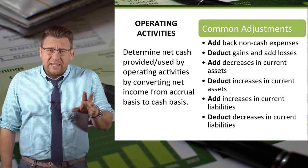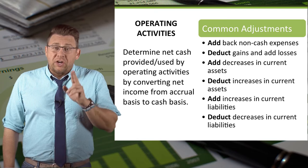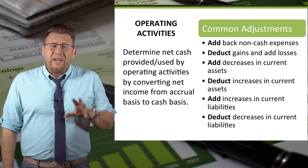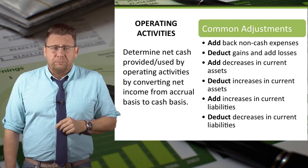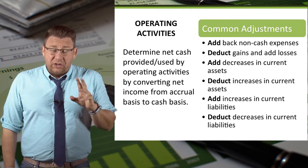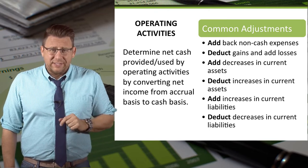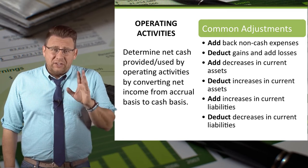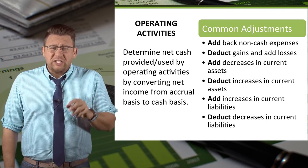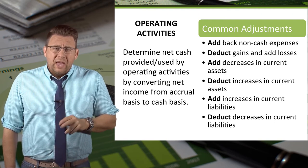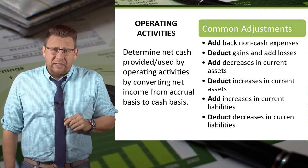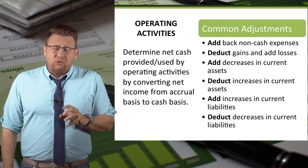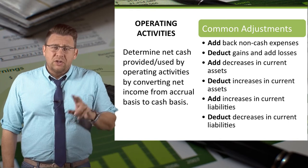We subtract gains and add back losses, because gains and losses are not the result of operating activities, but rather investing and/or financing activities, so we need to cancel out their effect in the operating activities section. We also deduct increases in current assets and add decreases in current assets — a shortcut explained in the video called Adjustments to Cash Flows Current Assets. Finally, we add increases in current liabilities and deduct decreases in current liabilities, as explained in the video called Adjustments to Cash Flows Current Liabilities.